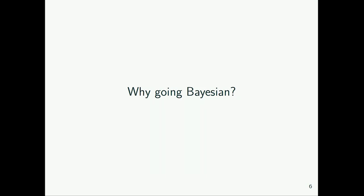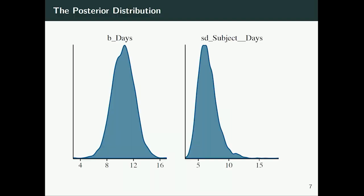So why should we do it in a Bayesian way? We could also do it in a frequentist way, like with GLMM or LME4. One major reason is that the information we get out of Bayesian procedures is much richer than the classical frequentist way using maximum likelihood estimation, because we get the full posterior distribution of the parameters — not only point estimates or the mode of the likelihood and a standard error, but the full posterior distribution.